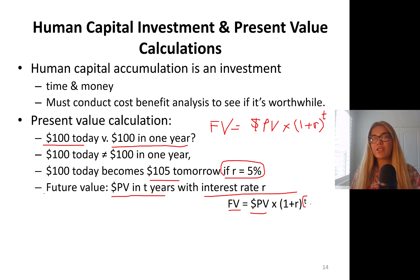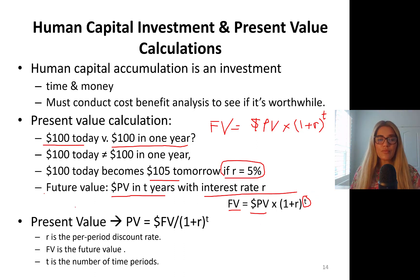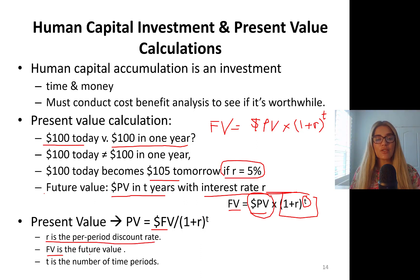Future value is present value dollars times (1 + r) raised to the power of however many years we are talking about. To find the present value, you divide both sides by (1 + r)^t. So present value equals future value divided by (1 + r)^t, where r is the per-period discount rate, FV is the future value, and t is the number of time periods.